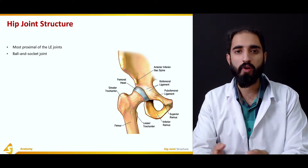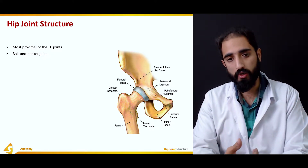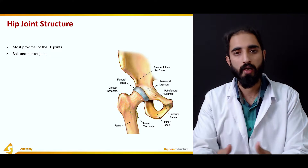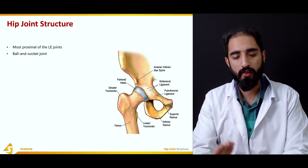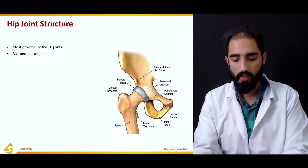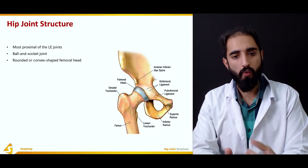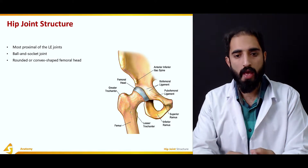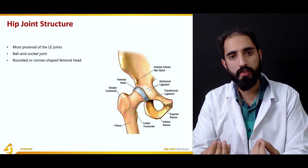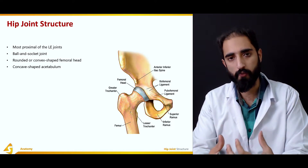Being a ball-and-socket joint, the hip is one of the most highly mobile joints in our body, but it is also stable as compared to the shoulder joint. The ball-and-socket structure provides the hip joint with three degrees of freedom, allowing movement in all three planes and all three axes, as well as circumduction. As a ball-and-socket joint it has one concave partner and one convex partner — the convex partner is the rounded femoral head and the concave partner is the acetabulum, which is like a depression or cavity.